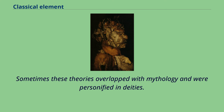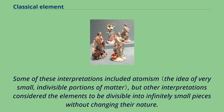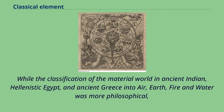These different cultures and even individual philosophers had widely varying explanations concerning their attributes and how they related to observable phenomena as well as cosmology. Sometimes these theories overlapped with mythology and were personified in deities. Some of these interpretations included atomism, but other interpretations considered the elements to be divisible into infinitely small pieces without changing their nature. While the classification of the material world in ancient Indian, Hellenistic Egypt, and ancient Greece into air, earth, fire, and water was more philosophical.